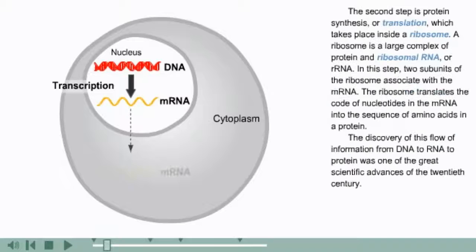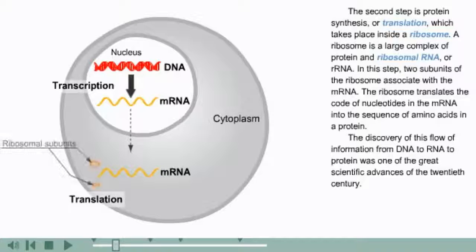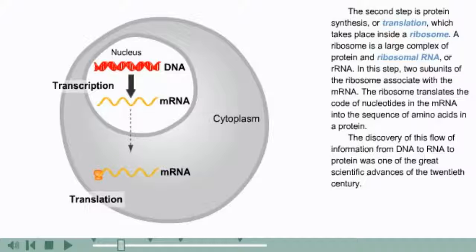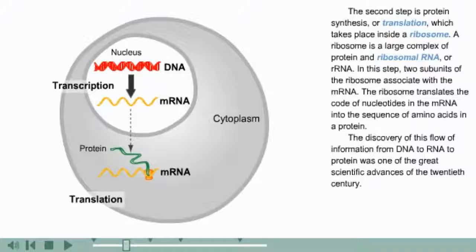The second step is protein synthesis or translation, which takes place inside a ribosome. A ribosome is a large complex of protein and ribosomal RNA or rRNA. In this step, two subunits of the ribosome associate with the mRNA. The ribosome translates the code of nucleotides in the mRNA into the sequence of amino acids in a protein. The discovery of this flow of information from DNA to RNA to protein was one of the great scientific advances of the 20th century.